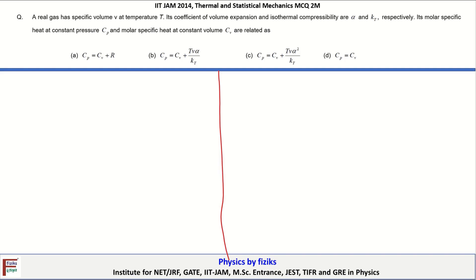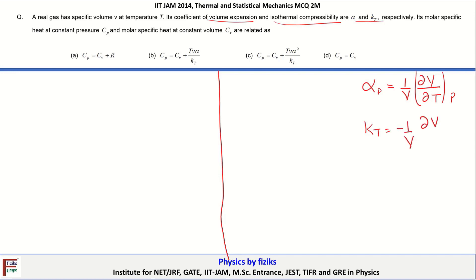The next question states: a real gas has specific volume V at temperature T. Its coefficient of volume expansion and isothermal compressibility are α and κT. The isobaric expansibility α is defined as (1/V)(dV/dT) at constant pressure. The isothermal compressibility κT is defined as −(1/V)(dV/dP) at constant temperature, where the negative sign accounts for the volume decreasing with increasing pressure.